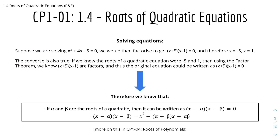Here we have more on roots of quadratic equations. Suppose we're solving x² + 4x − 5 = 0. We factorize to get (x + 5)(x − 1) = 0, and therefore x = −5 and x = 1. The converse is also true: if you knew the roots were −5 and 1, then by the factor theorem, (x + 5) and (x − 1) are factors, and the original equation is (x + 5)(x − 1) = 0.